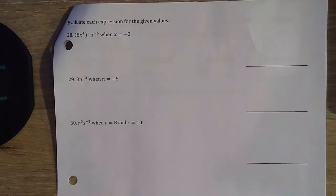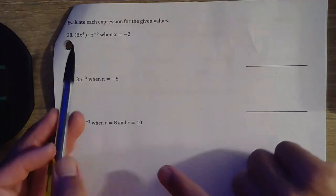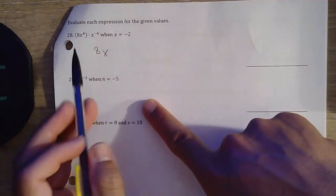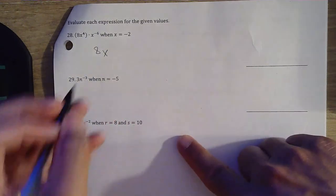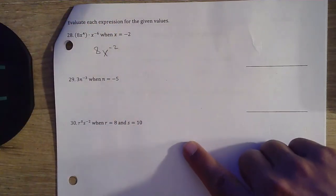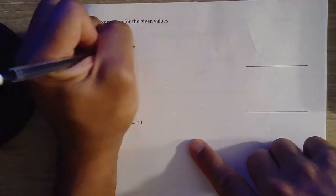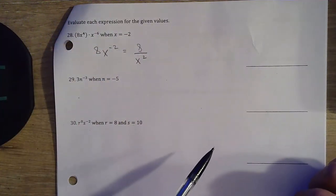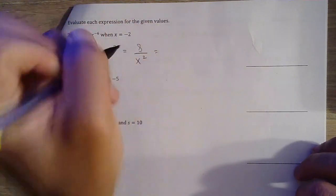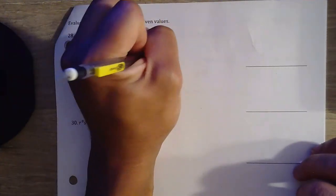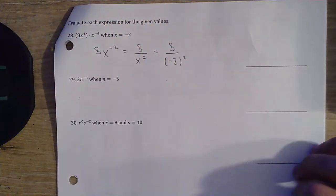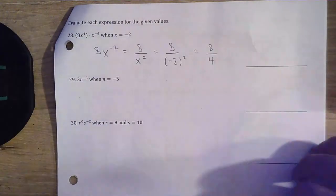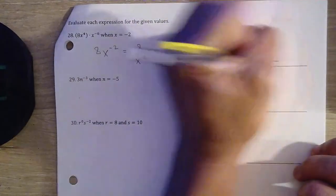Number 28. Let's go ahead and simplify using our rules. We're just going to have 8, and then x to the 4 minus 6 — that's going to be negative 2. We don't want negative exponents, so we have 8 over x squared. Then we plug it in: x equals negative 2, so 8 over negative 2 squared — that's the same thing as 8 over 4. Final answer: 8 divided by 4 is just 2.